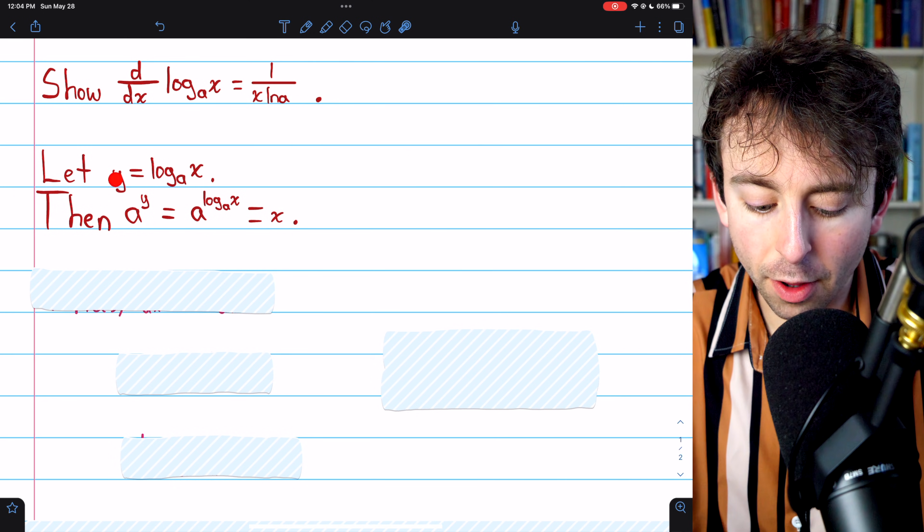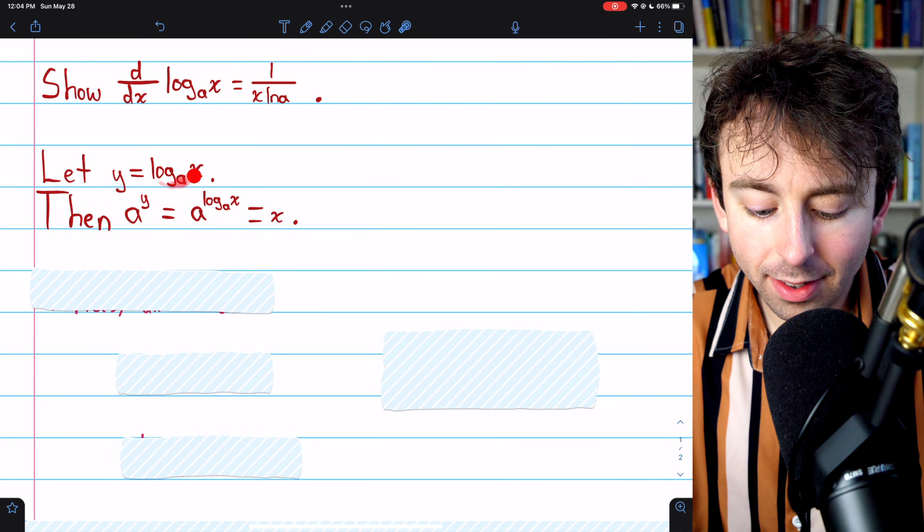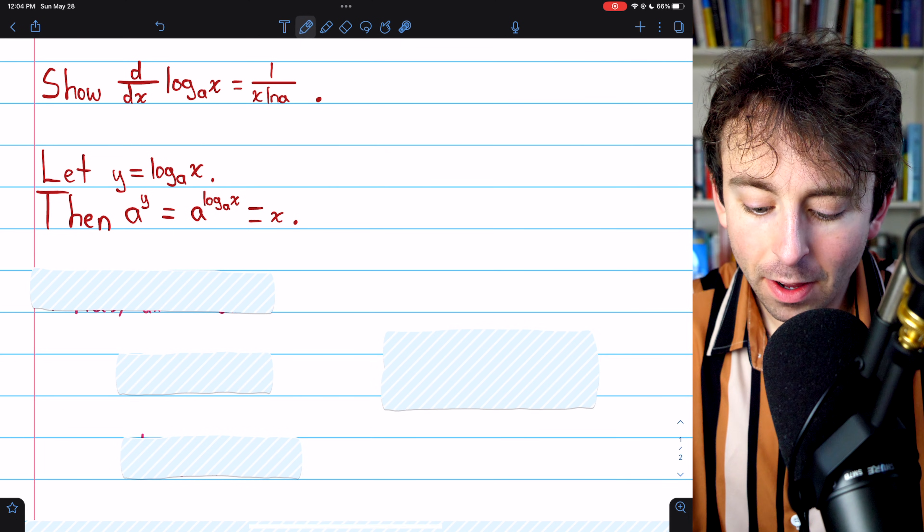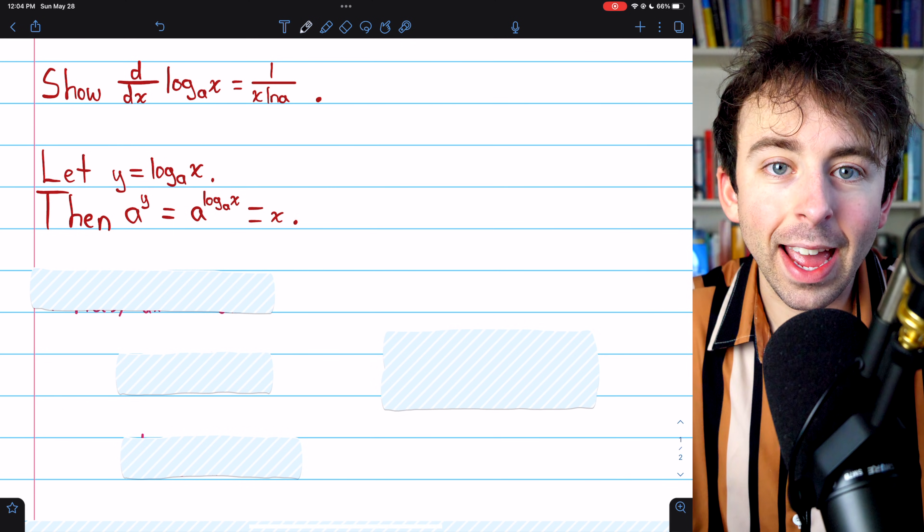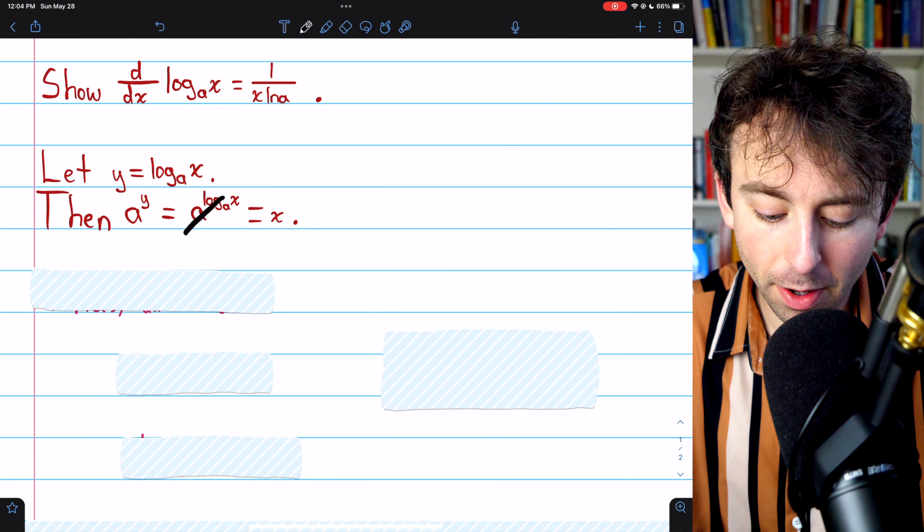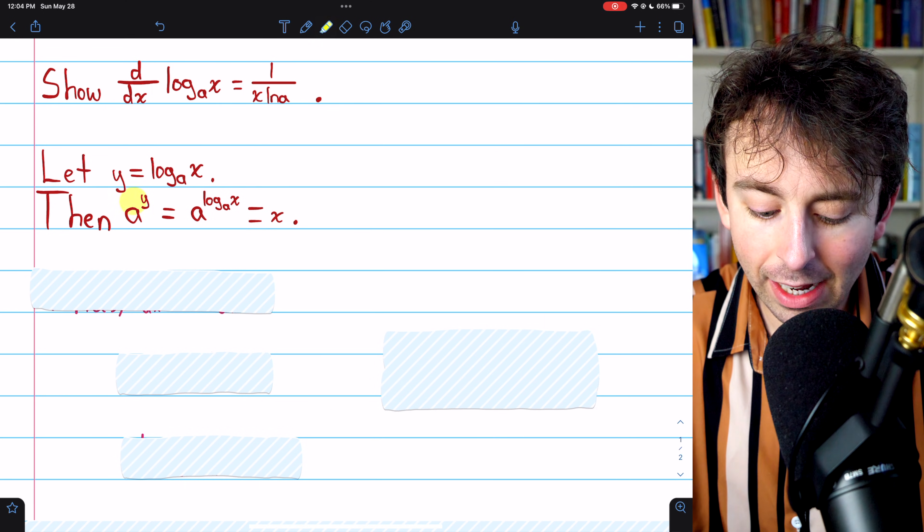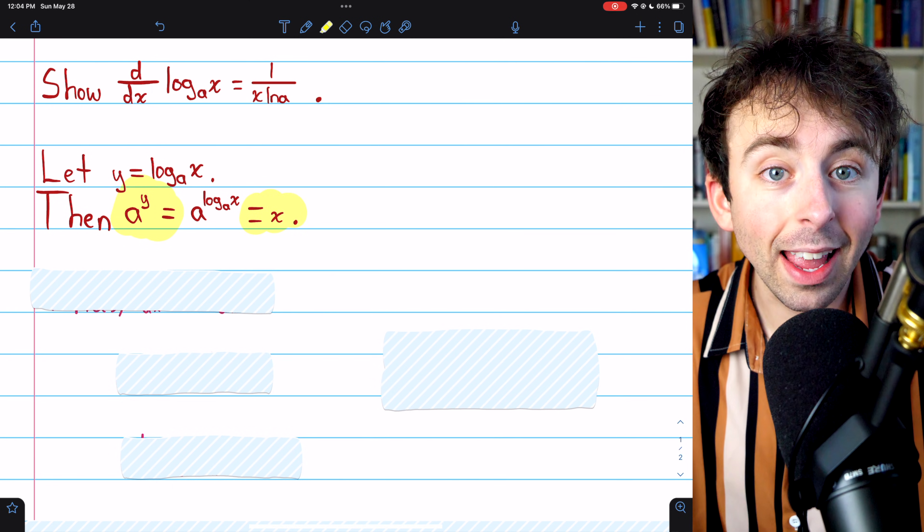On the left side, we have a to the power of y, and on the right side, we have a to the power of log base a x. But a to the log base a x, by definition of the logarithm, those cancel out and just leave x. So in total, we have that a to the y is equal to x.